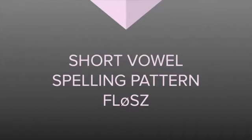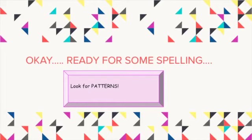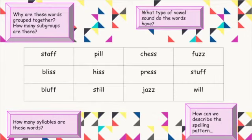Understanding syllables and understanding closed syllables is very, very important to our floss short vowel spelling pattern. Let's do a little exploration — we're going to look for patterns. Let's look at these words: staff, bliss, bluff, pill, hiss, still, chess, press, jazz, fuzz, stuff, will.